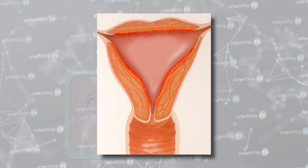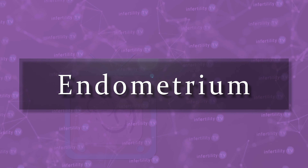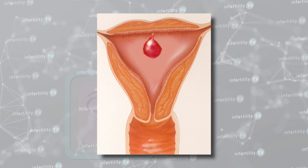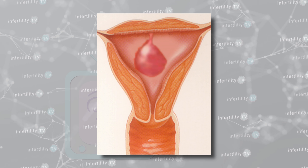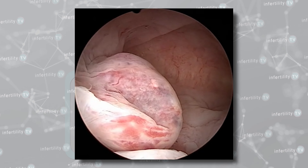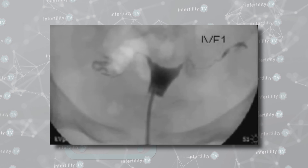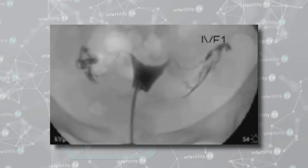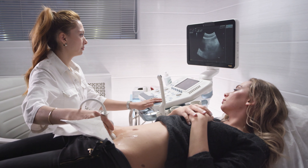The uterine cavity is lined with cells which collectively are referred to as the endometrium. Abnormalities in the uterine cavity, such as scar tissue, polyps, and fibroids, can result in IVF failure. These abnormalities can be detected by looking inside the uterus with a hysteroscope, by performing the X-ray test known as an HSG, or by performing a saline ultrasound.